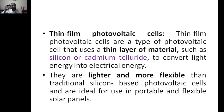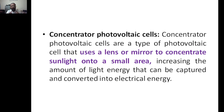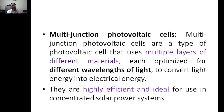Concentrator photovoltaics use lenses or mirrors to concentrate sunlight into a small area, focusing it to improve efficiency. Multi-junction photovoltaic cells use the same thin-film concept but with multiple different layers.